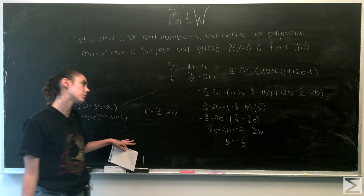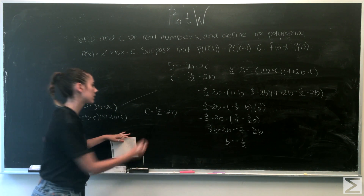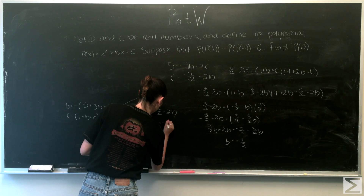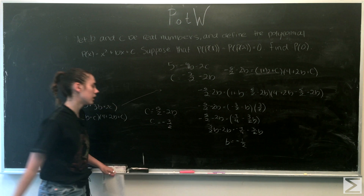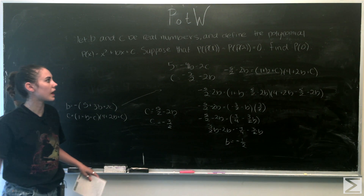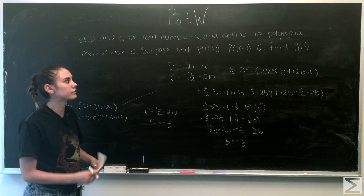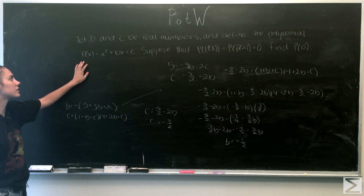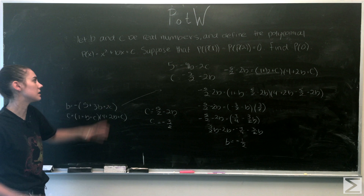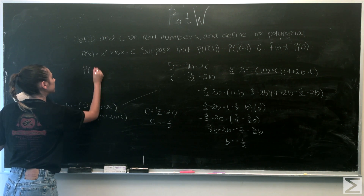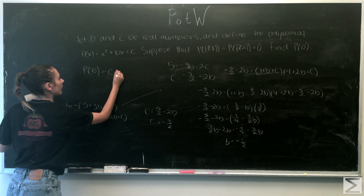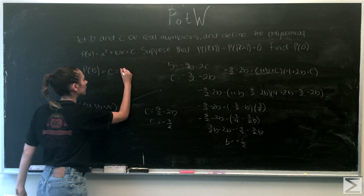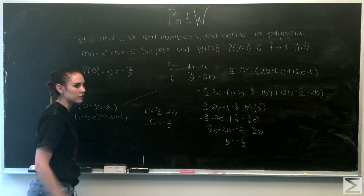Since c = −5/2 − 2b and b = −1/2, we get c = −3/2. To find p(0), we just plug 0 into p(x) = x² + bx + c, which gives p(0) = c. Therefore, p(0) = −3/2.